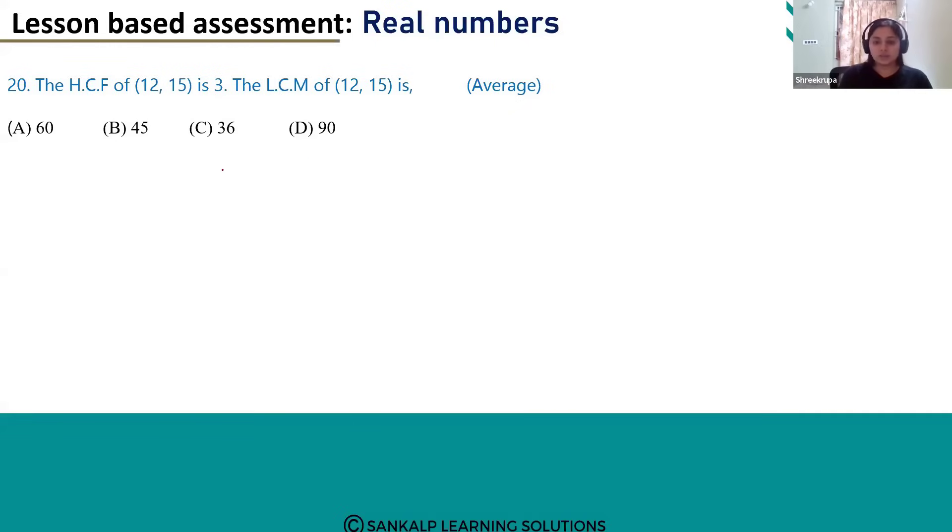We know the formula for this. What is it? HCF of A and B multiplied by LCM of A and B will be equal to the product of A and B. Here we know the values for A and B and also we know the value of HCF of A and B.